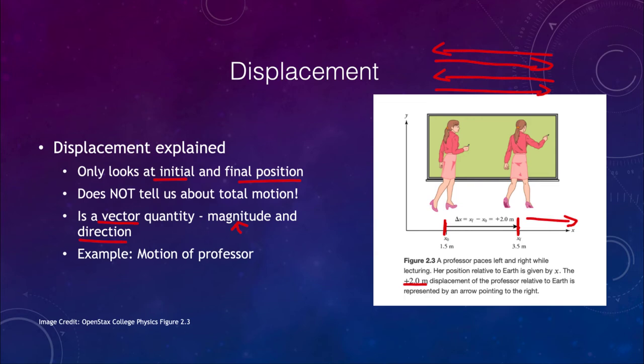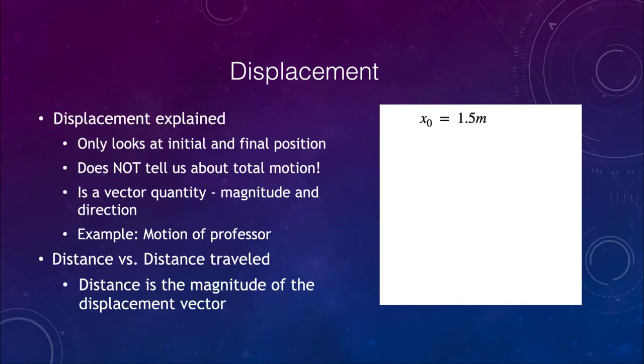And that would be a different displacement than moving two meters to the left. So this looks at the example here. Now let's look at this in a more detailed example calculation. What we see is that we start off, let's look at our numbers here, we have the initial value is 1.5 meters. Now, how do we define what 1.5 meters is?